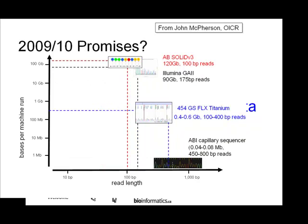This is where companies hope to be next year — promising about 120 gigabases for SOLiD and about 90 gigabases for Illumina, jockeying for position at the top. 454 is also going to generate more data in the ~400 bp read length range. There's no more development on the Sanger platform, so that one isn't changing.